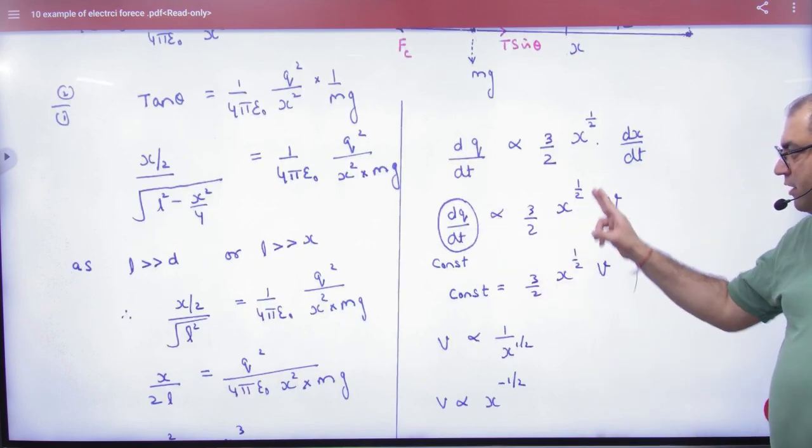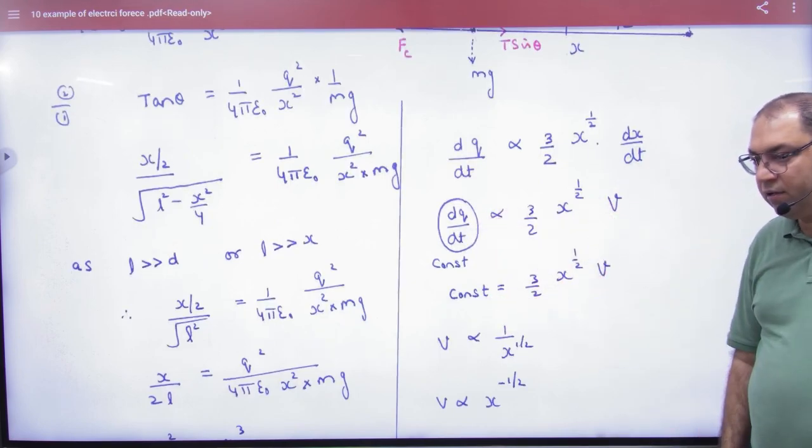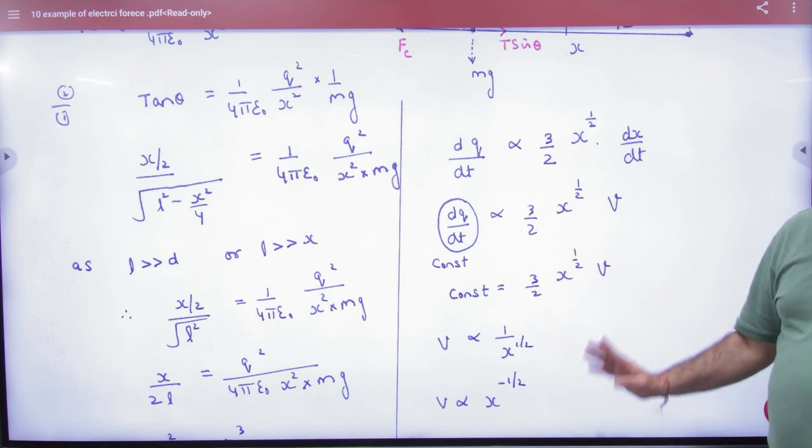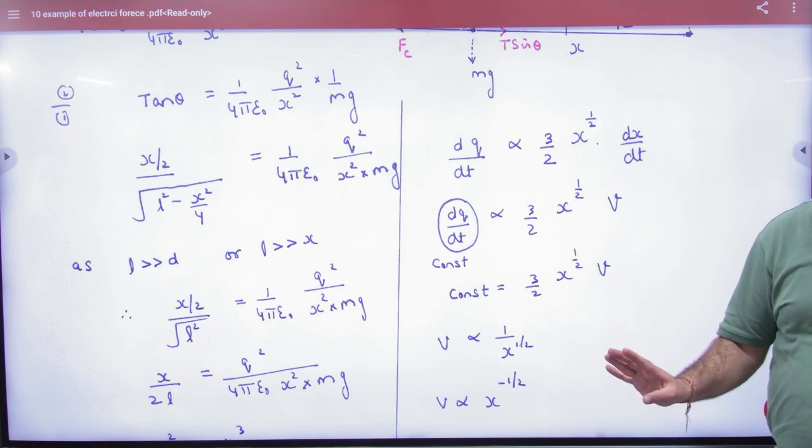Everything is constant. V and x power half give some constant. So V is inversely proportional to x power half, or x power minus half.